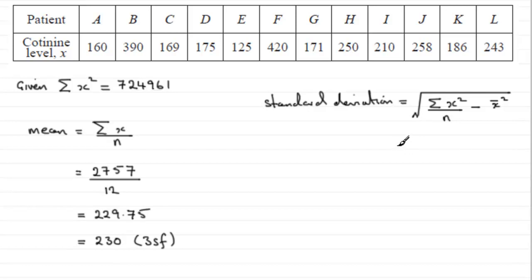So all we need to do is put our values in. And we've got this value, they gave it to us. Okay, so we're going to have the square root of 724961, all divided by 12.